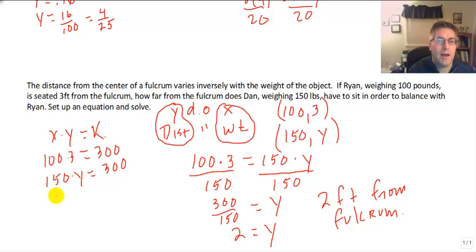In fact, I could choose any weight I wanted. 75 times some y has to equal 300. 25 times y equals 300. So that's the k. The k in this particular inverse variation is a constant.